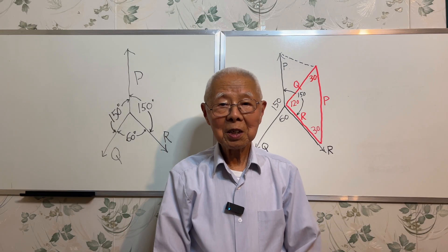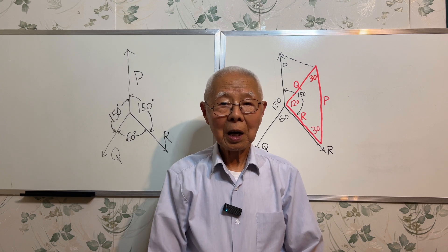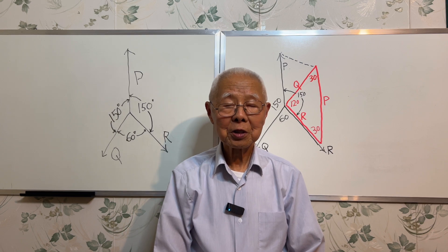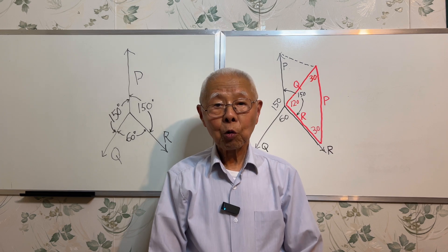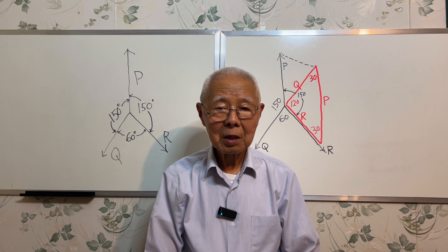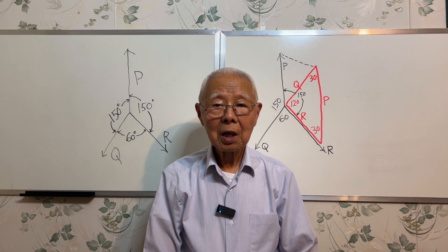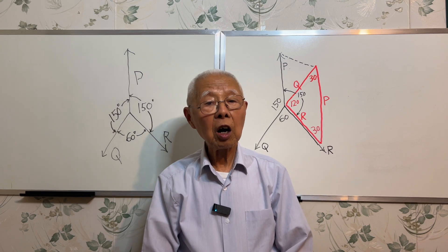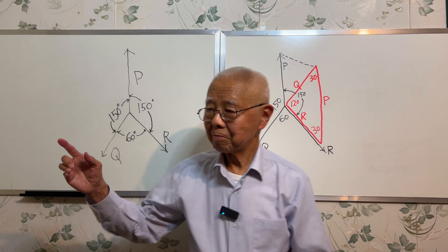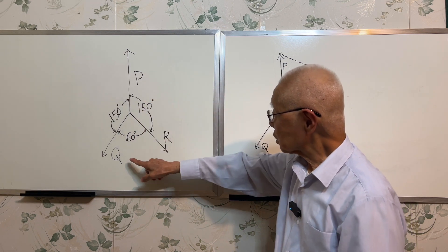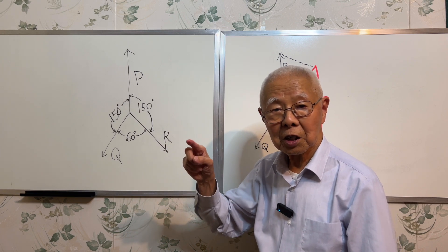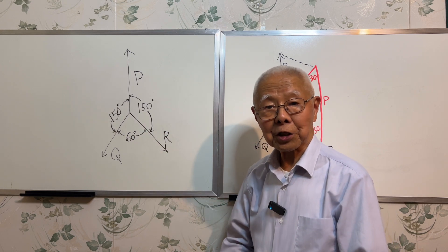Hello everybody. Today's lesson is about vectors, or you can call them forces, because forces can be considered as vectors. The question is: I have three vectors acting at one point and they are in equilibrium. The magnitudes of the three vectors are not given, but the angles between them are given. Here is a diagram — three vectors P, Q, R — these three forces are acting at a single point and they are in equilibrium.